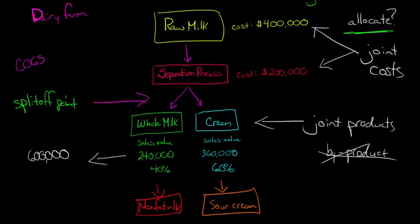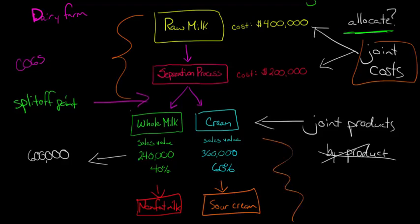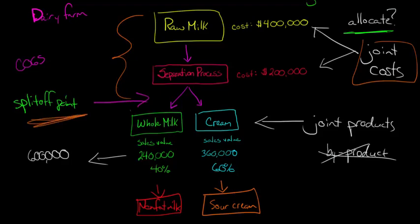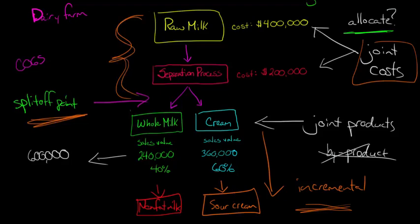Here's the key issue: if we have allocated joint costs — those costs incurred before the split-off point — down into our product-level decisions, they can distort our analysis. Once we reach the split-off point, those joint costs have already been incurred. Going forward, we want to think only about incremental costs and revenues. Any joint costs that happened before the split-off point are sunk costs; allocating them can lead to bad decisions when we're deciding whether to sell or process further.